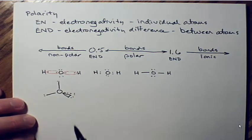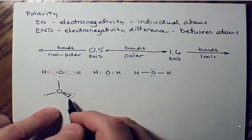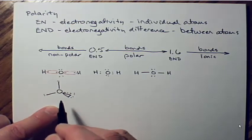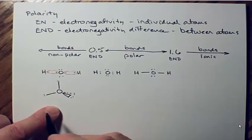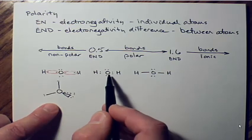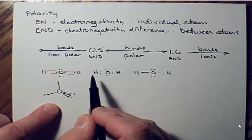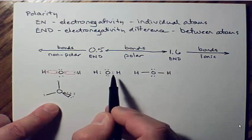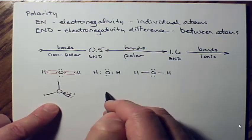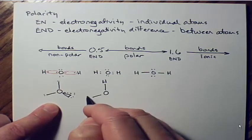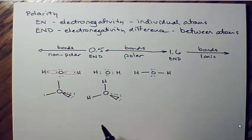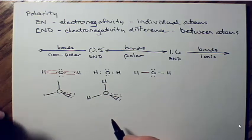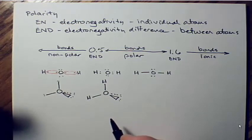We put our electron sets on the ends of the arms or bond angles, giving us a tetrahedral electron pair shape. That's the 3D geometry. The next step is to replace two sets of electrons with the hydrogens, because two of the four sets of electrons are shared. You have to keep all the angles exactly the same. This is called a modified electron pair shape, and its 3D geometry is still tetrahedral.